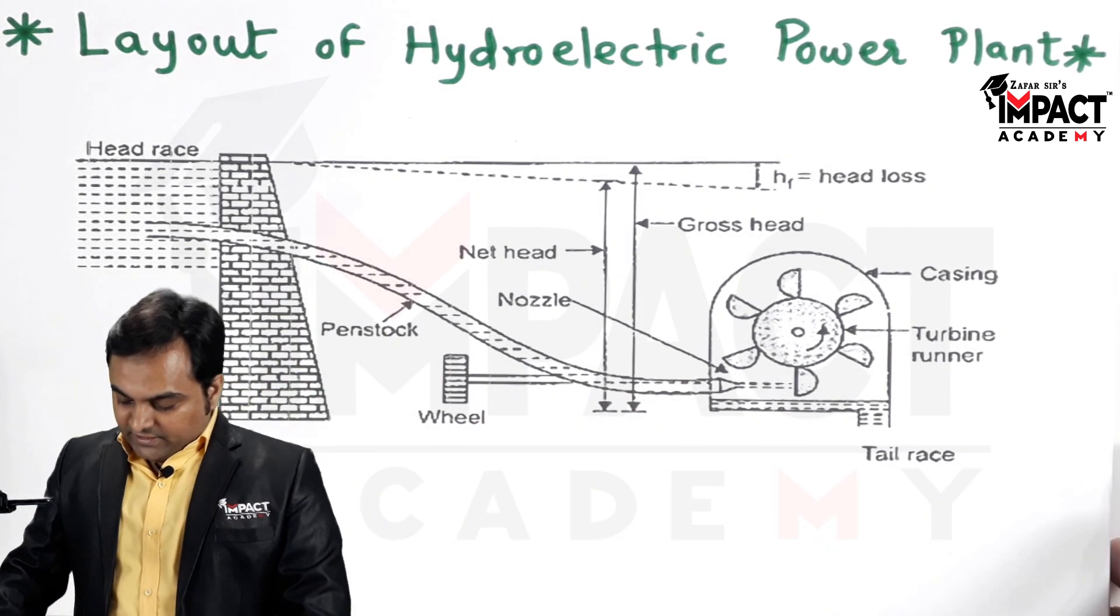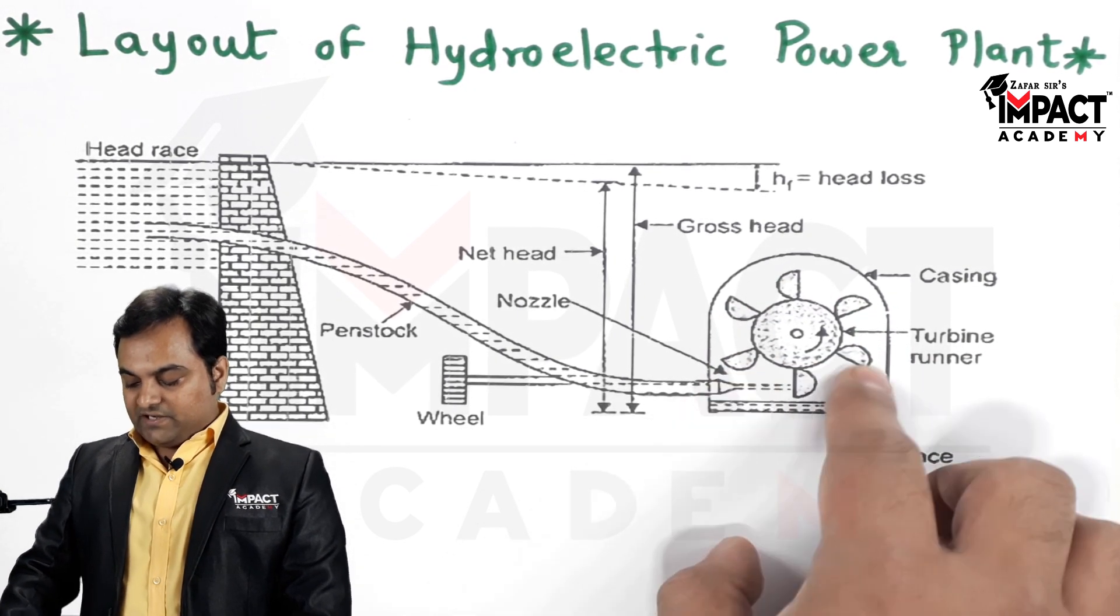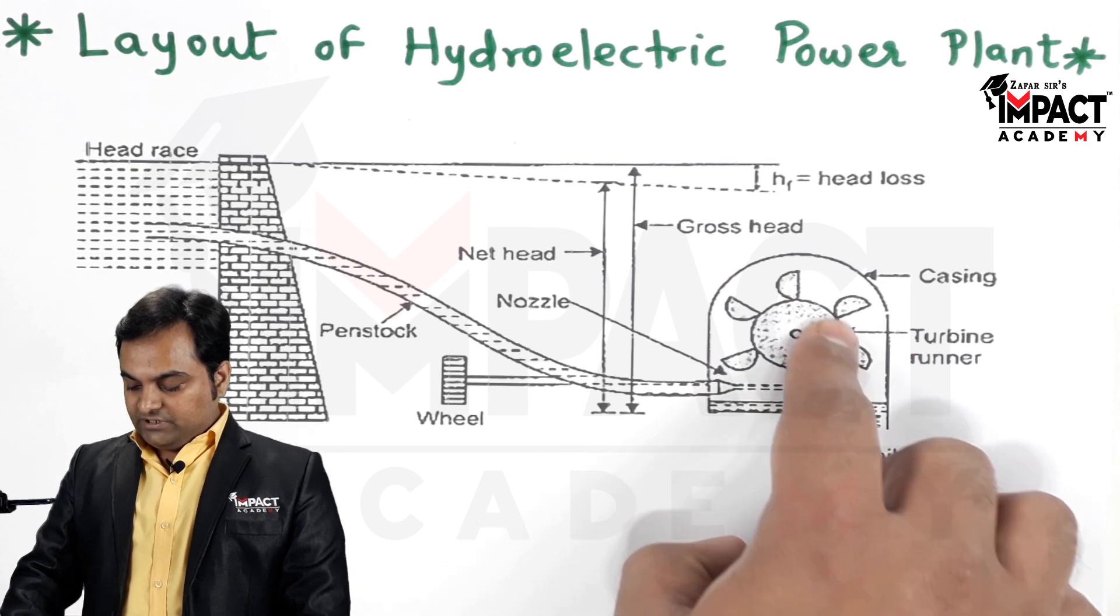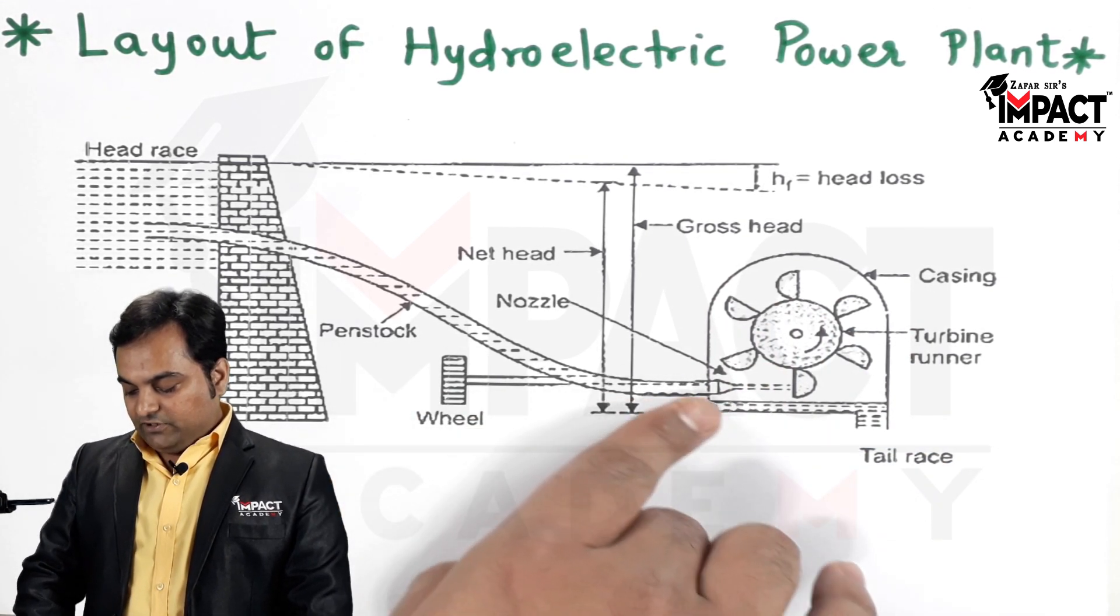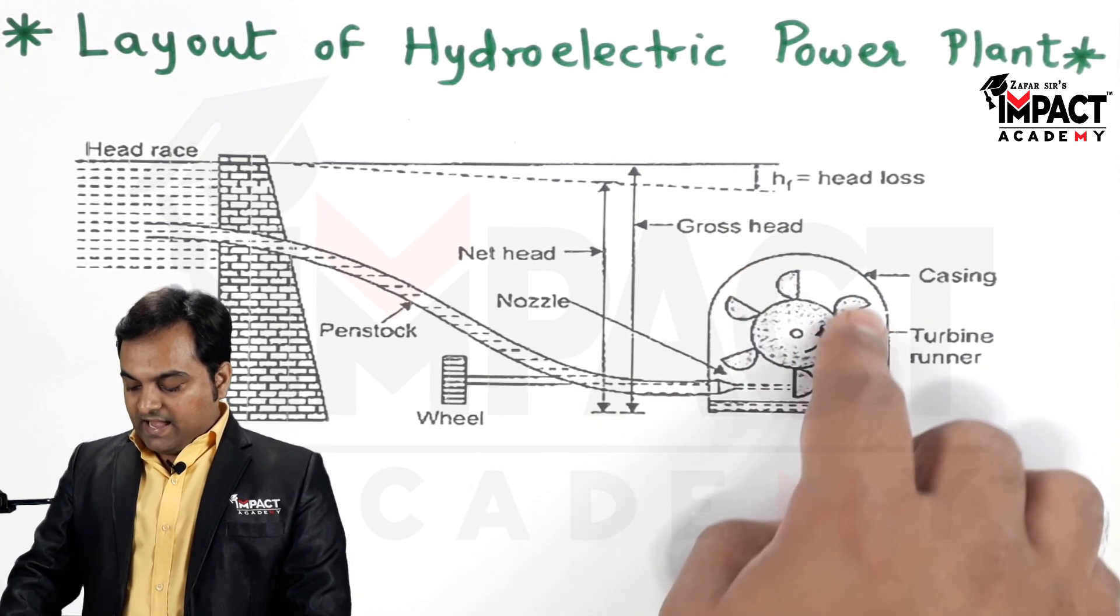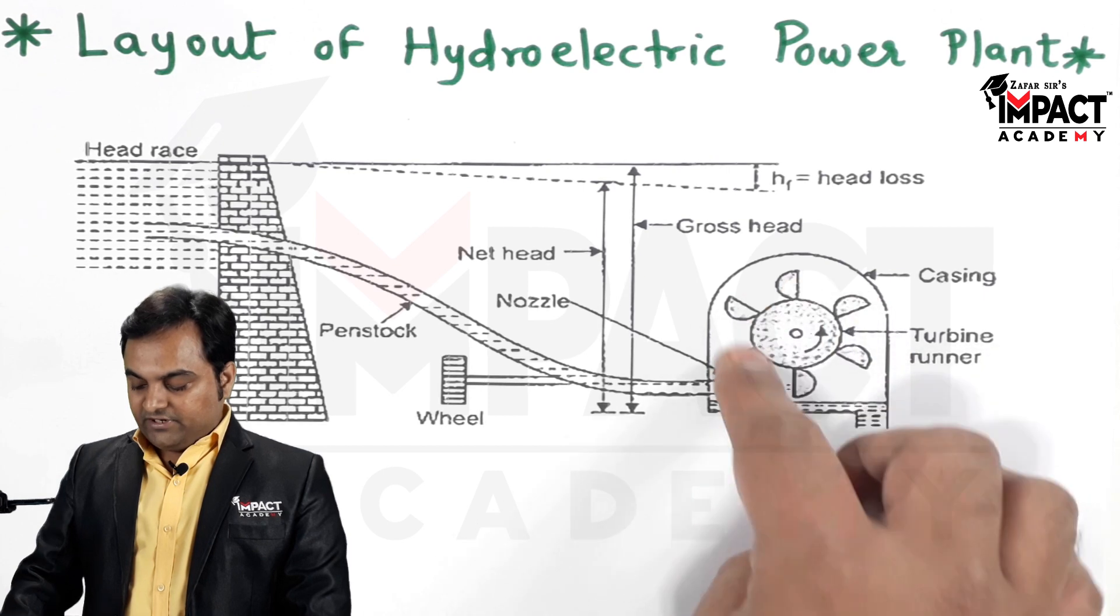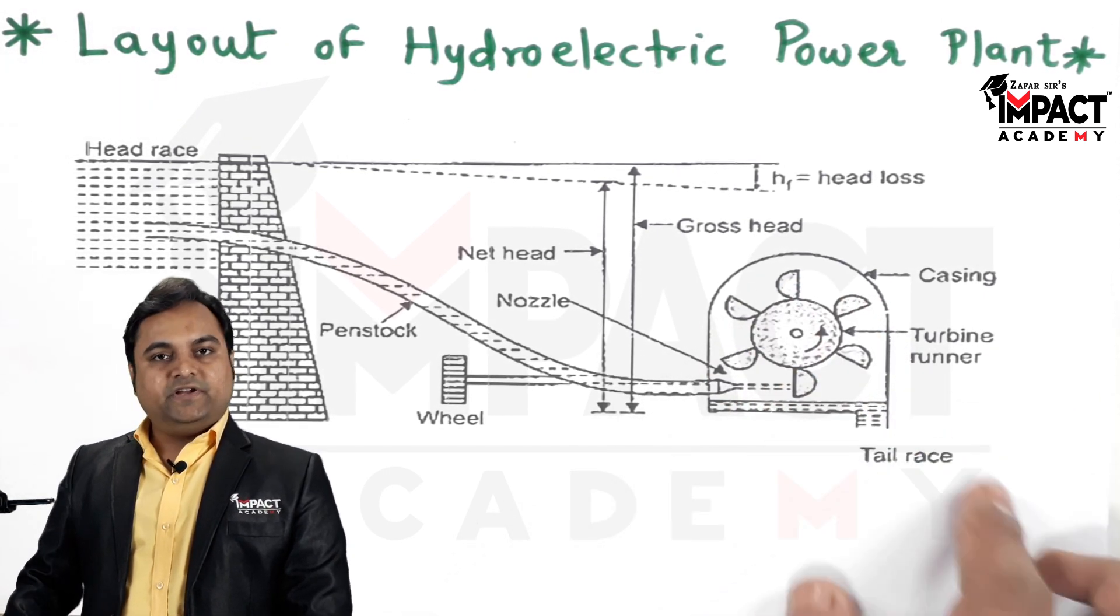Then after the nozzle, here we have a turbine runner, or these are called as the buckets which are attached to this turbine runner. The water which is transferred from the nozzle would be striking these buckets, and therefore the turbine runner would be rotated, and once the turbine runner rotates we get the output work.